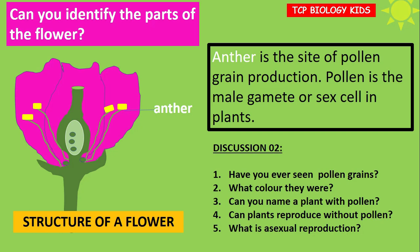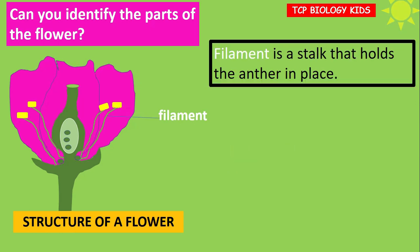The anther is a site of pollen grain production. Pollen is a male gamete, or sex cell, in plants. Discussion: Have you ever seen pollen grains? What color were they? Can you name a plant with pollen? Can plants reproduce without pollen? What is asexual reproduction? Pause the video, gather these answers, and do that discussion with your teacher.